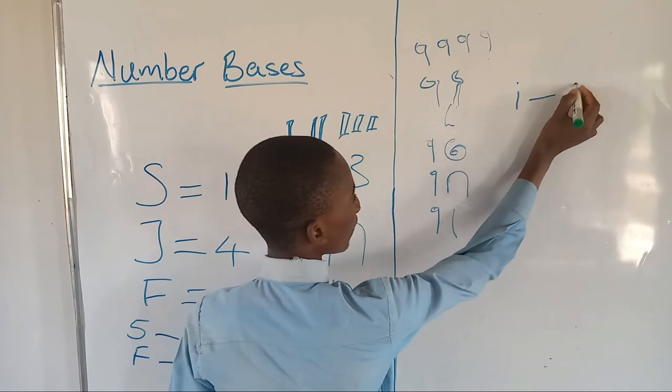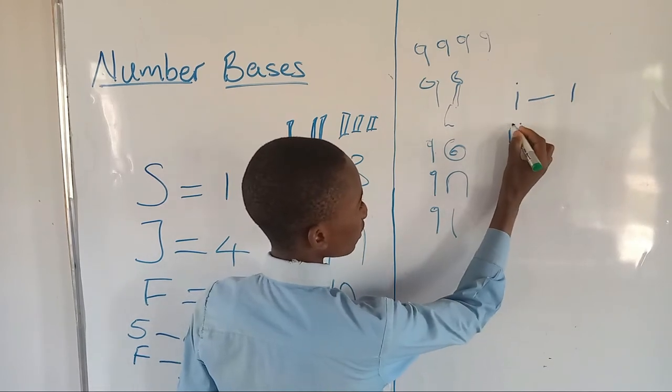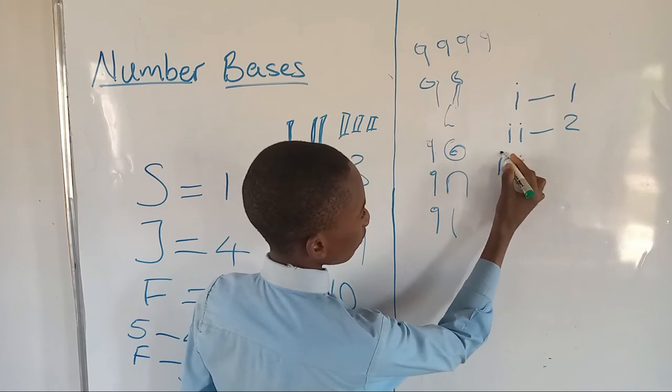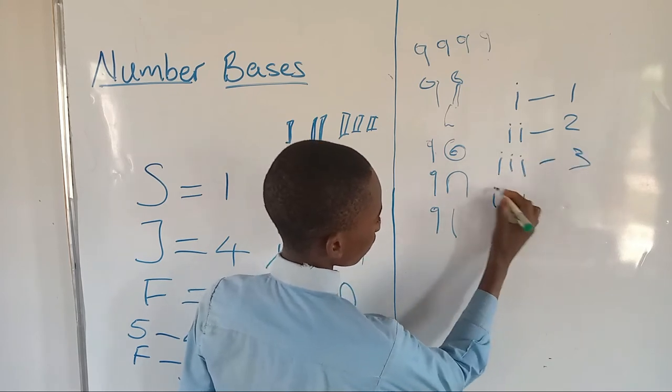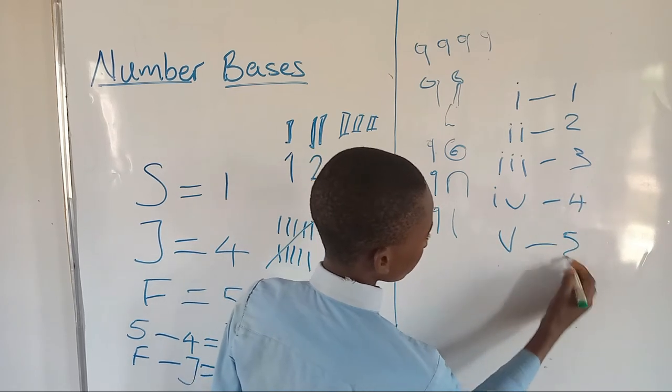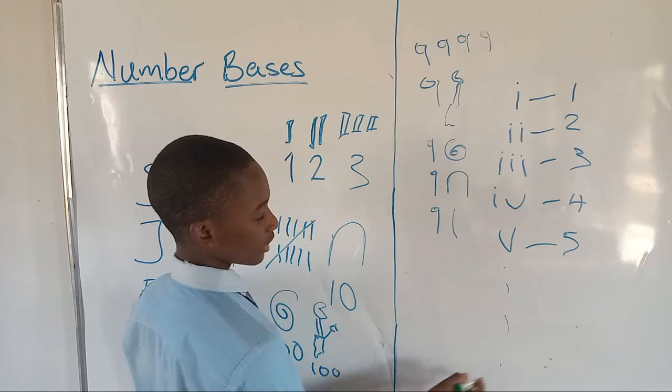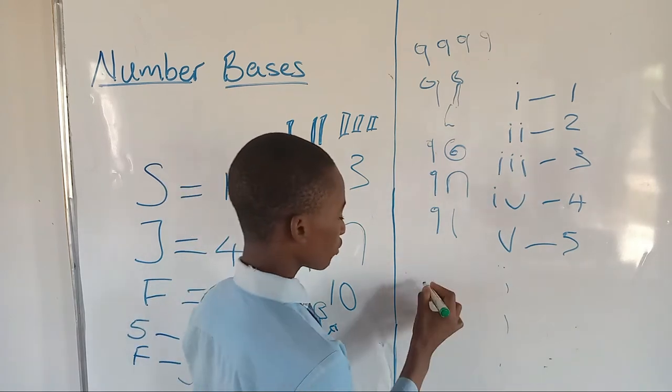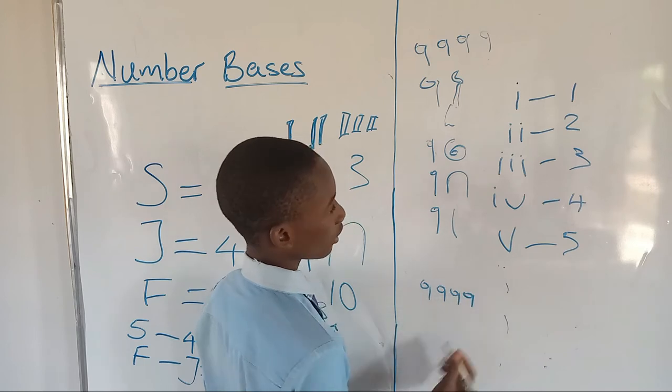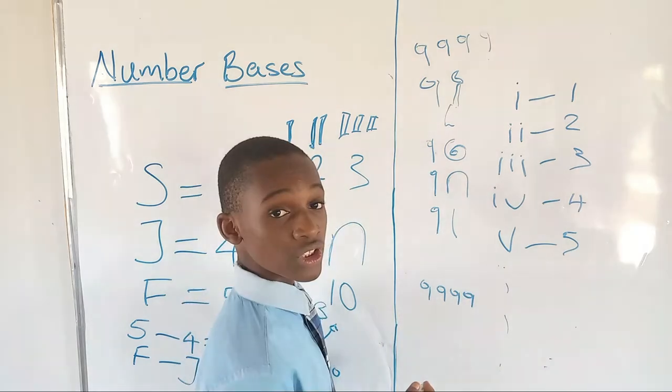And then the Romans came with their own method of counting. I stands for 1, II for 2, III for 3, IV for 4, V for 5, and so on. But for you to write 9,999, it's going to take a long time to start writing all the I's and V's.